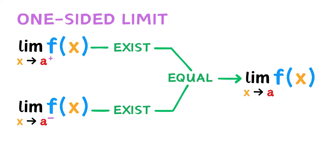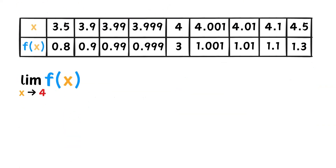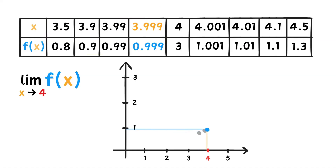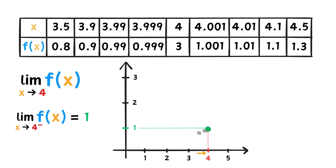So far, all the limits we've evaluated were on graphs. So let's try finding some limits using tables. Using the data from this table, can we find the limit of f of x as x approaches 4? Well, let's first sketch the points. Using the values smaller than 4, or to the left of 4, as the distance between the x point and 4 gets smaller and smaller, the function seems to approach 1. So from the data, we can conclude that the limit of f of x as x approaches 4 from the left is 1.